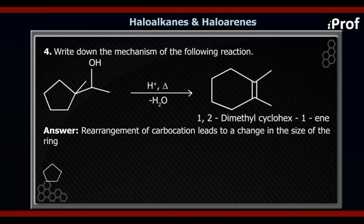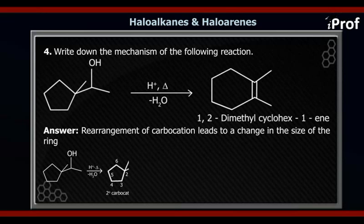H+ will attack on OH and form OH2+. Because OH2+ is a good leaving group, it will move out and a carbocation will be formed, which is a secondary carbocation. Because we have a five-membered ring and on this ring there is a carbon which has a positive charge, this is a case of ring expansion.